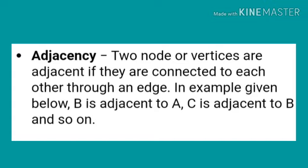Adjacency. Two nodes or vertices are adjacent if they are connected to each other through an edge. In the example given below, B is adjacent to A, C is adjacent to B, and so on.